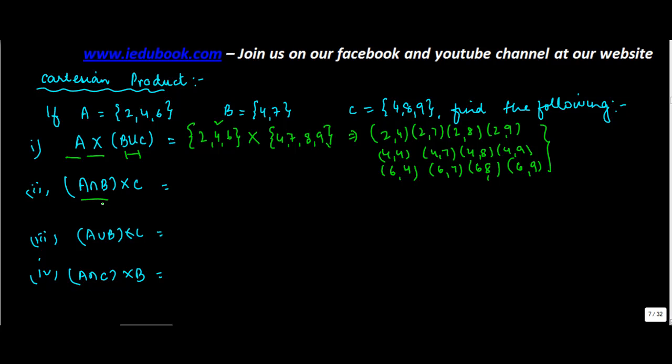Second, A intersection B. What does intersection mean? Elements which are present in A and B. So what are these elements? 2, is it present in B? No. 4, yes. So you get 4 here. 6, again no. 4 cross C, which is {4, 8, 9}. So this one is simple. 4 with 4, 4 with 8, and 4 with 9.